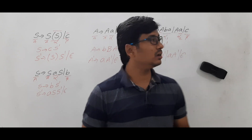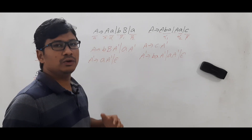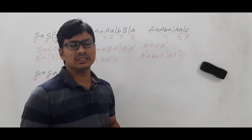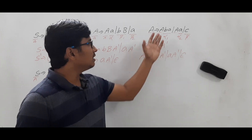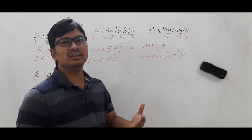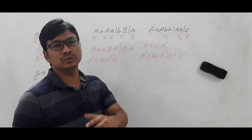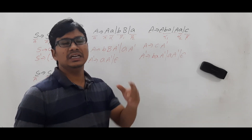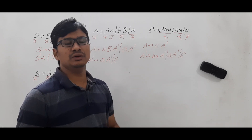We have converted the given left recursion grammar to equivalent right recursion grammar for each case. I hope you have understood the concept with these examples. If you still have any doubts related to this concept, feel free to ask. In the next video I will discuss indirect left recursion grammar — where we cannot find the left recursion directly but can find it indirectly. I will discuss how to identify it and how to convert it. Thank you for watching my video, have a nice day.